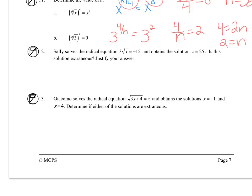Sally solves a radical equation and gets 25. Is the solution extraneous and justify your answer? So to justify or to check it, let's plug in 25. So the square root of 25 is 5, so she got 15 equals negative 15, which is not true. So that means x equals 25 is extraneous.